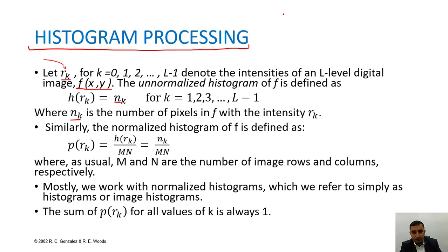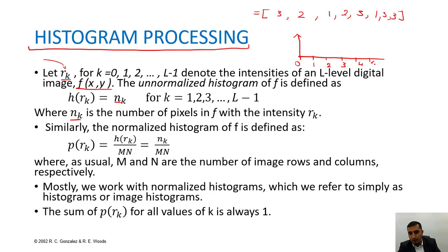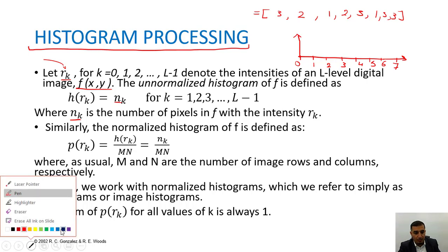For example, if my image has the values 3, 2, 1, 2, 3, 1, 3, 3, and I want to find the histogram of this image — this is a 3-bit image — the histogram values go from 0 through 7. We check which intensity values appear and how many times.